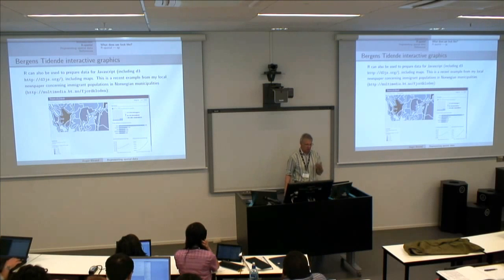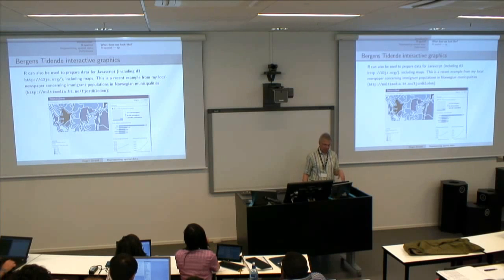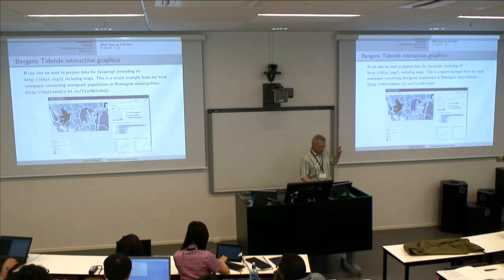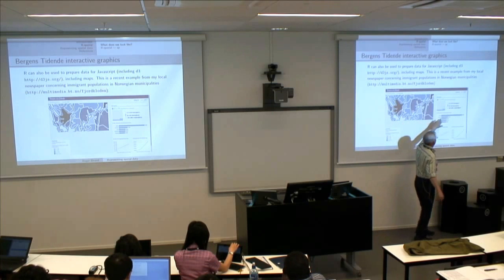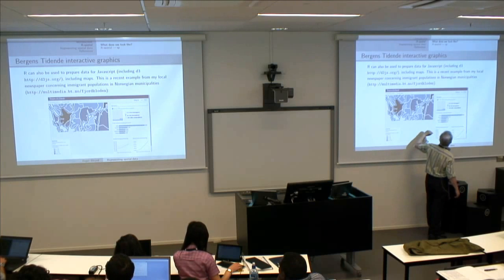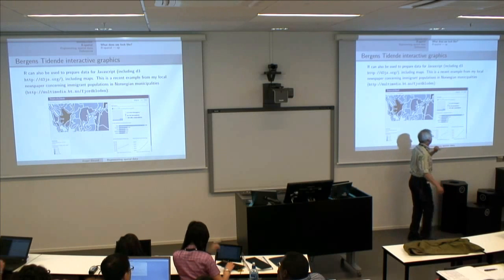R is also used by the local newspaper in Bergen. They've been running a series of articles about immigrants in Bergen. They managed to get the boundaries of the municipalities without difficulty, and then they have a dynamic interface — you click on Bergen and can find that of the almost 272,000 people in Bergen as of 1 January 2014, 36,258 were not Norwegian citizens.